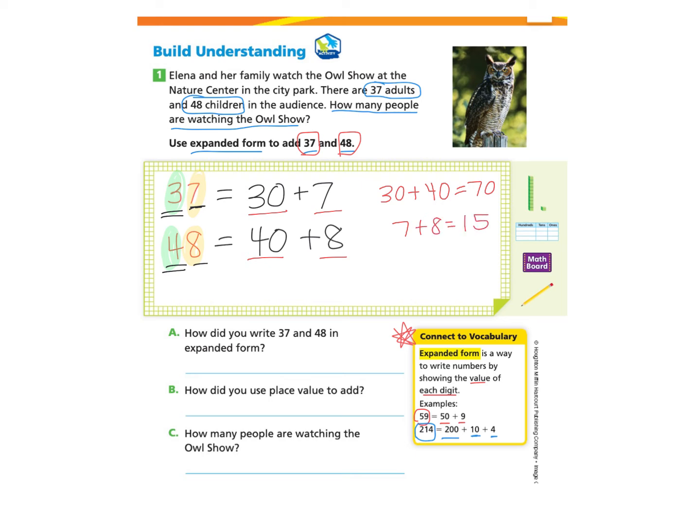And we're not finished yet because we still need to add 70 and 15 together. So then we add 70 plus 15 and get the answer of 85, which is our total.